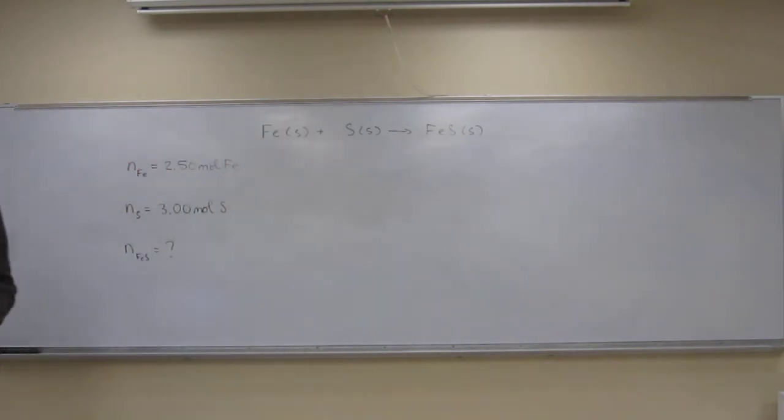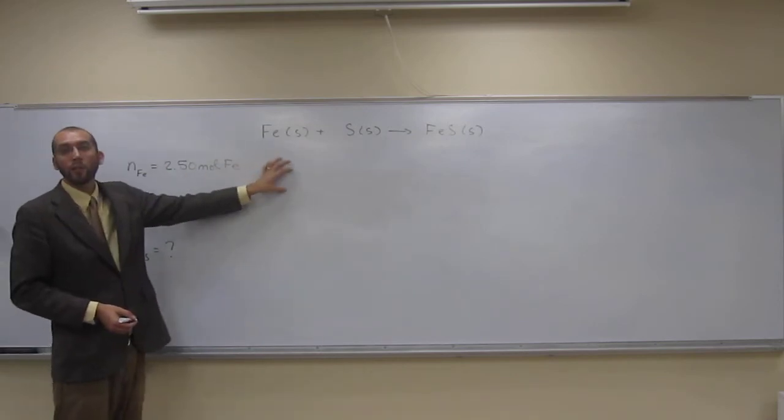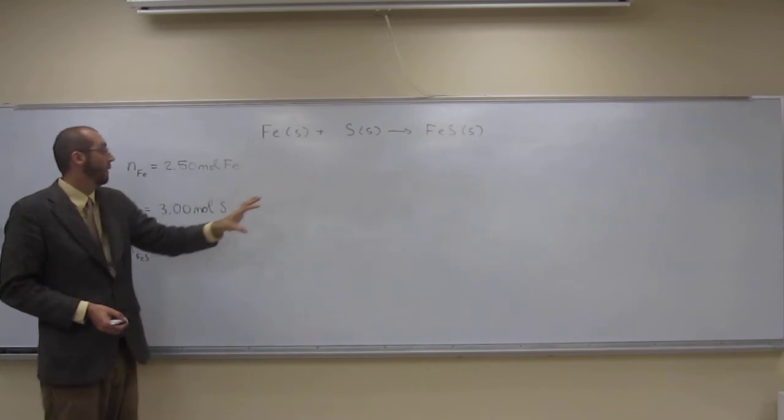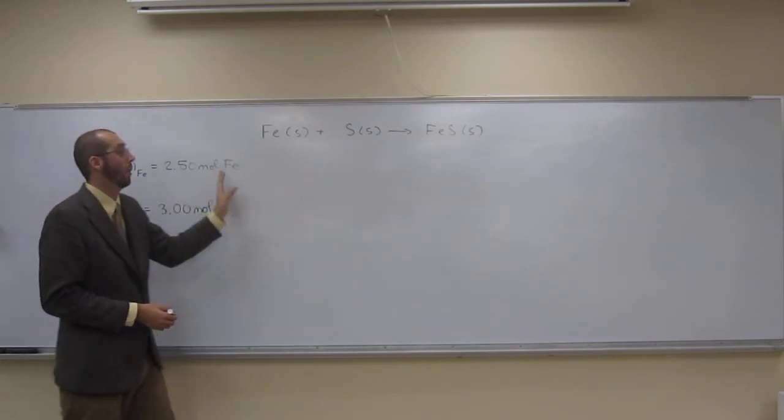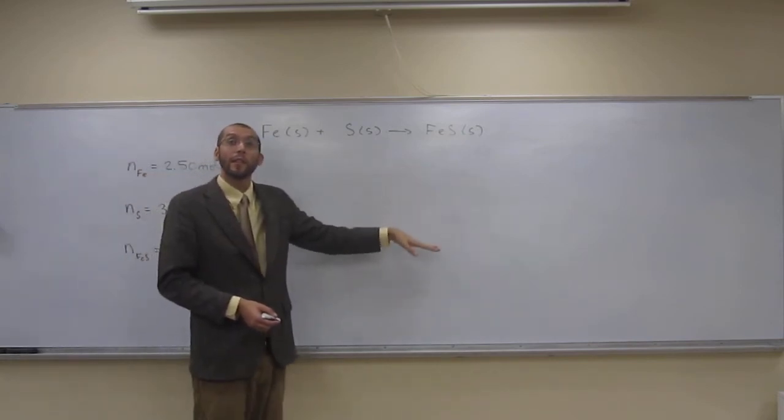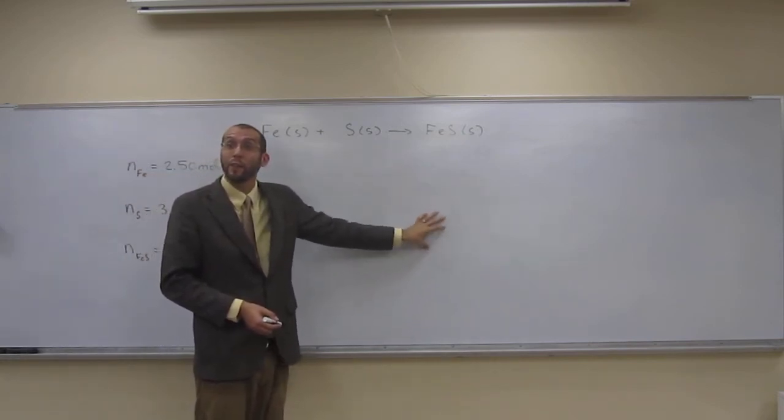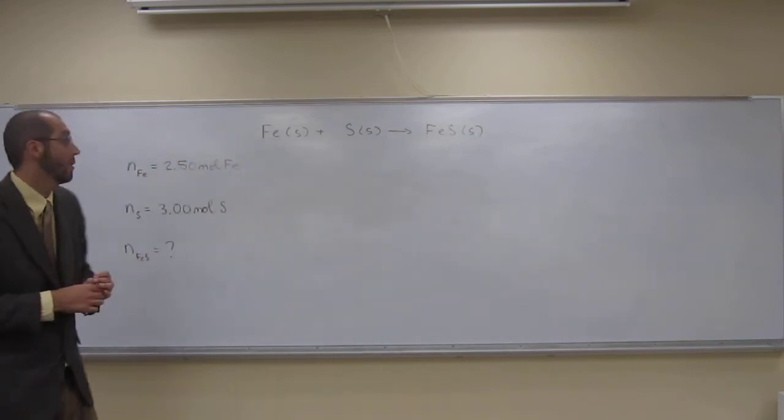So how do we do this? What we're going to figure out is we've got to figure out the mole ratio of iron to iron sulfide and sulfur to iron sulfide. We're going to convert both of these into iron sulfide, and whichever one gives us the least amount, that's the amount of iron sulfide that we can make. Does everybody understand that? Okay, so let's do that.